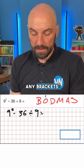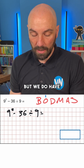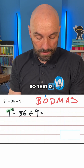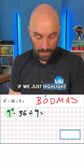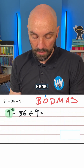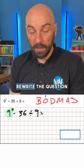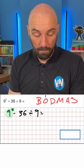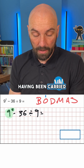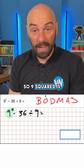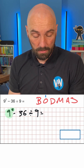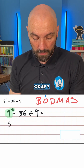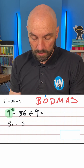Now the first thing that we would do — we don't have any brackets in the question, but we do have orders. So if we just highlight that part, 9 squared is 81. So we would rewrite the problem.